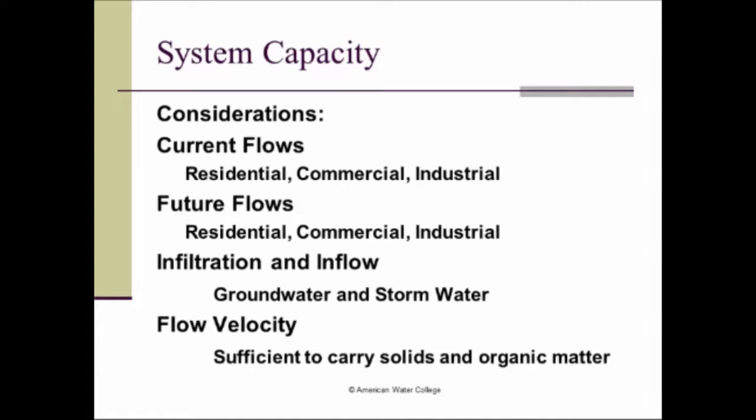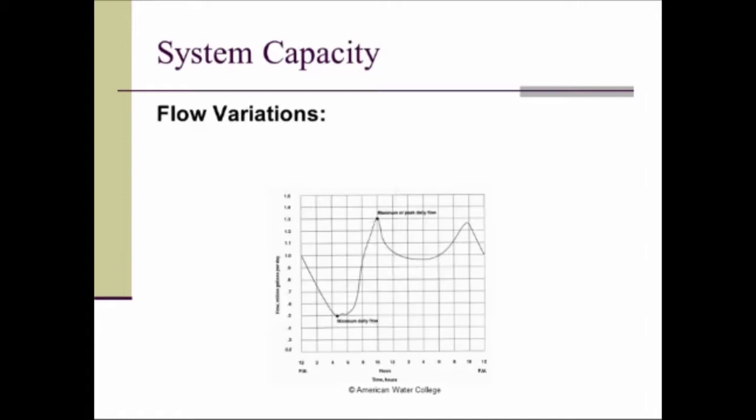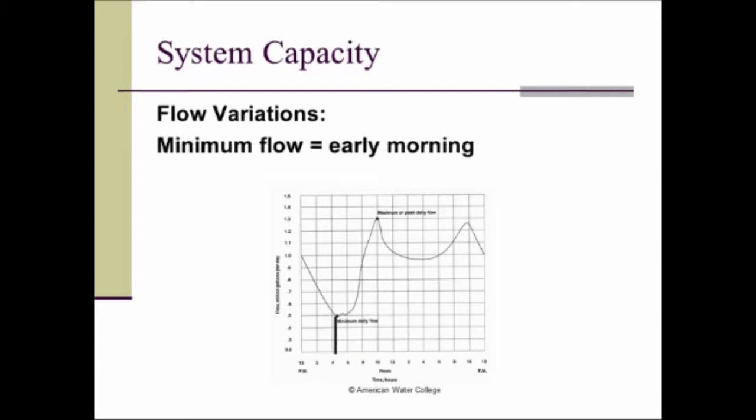And one way to help us size our system is to look at the variations in flow. Now you're going to have your lowest flows or your minimum flows generally early in the morning. And this graph is just showing a daily flow in a typical system. So in the morning, you'd have your minimum flow. And then in the middle of the day, somewhere between 10 and noon, you'll have your highest flow or your peak flow. And then it'll drop off a little, come back up in the evening, and then drop off as people are sleeping in the night. But these flow considerations or flow variations have to be taken into consideration when sizing or designing the system capacity.